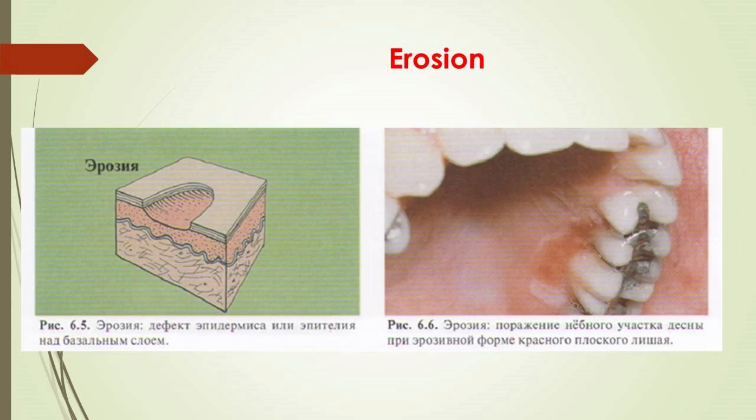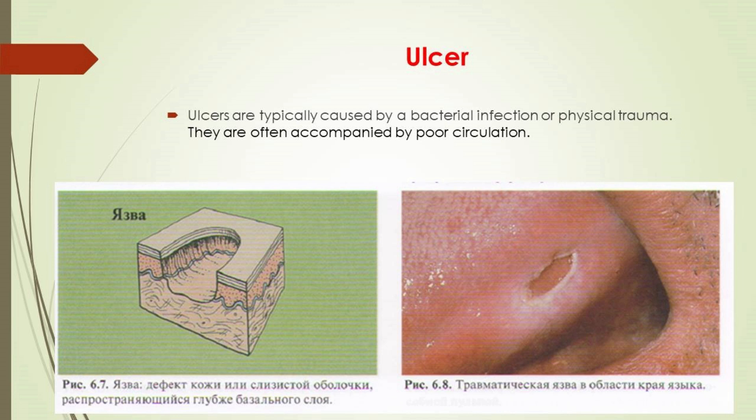Erosion is an epidermis defect above the basal layer — visible even intraorally. An ulcer is typically caused by bacterial infection or physical trauma, often accompanied by poor circulation. An ulcer is a skin defect spreading deeper than the basal layer.